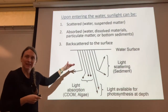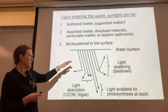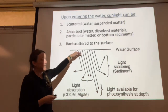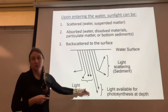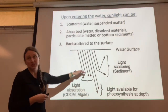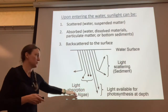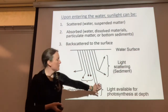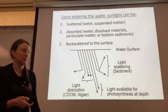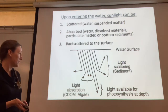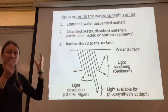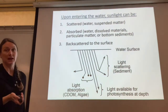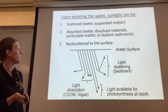Just getting light into the water is challenging enough, and then it attenuates — meaning it diminishes — as it goes down through the water. So there's not much light available for photosynthesis at depth; lots of things can happen to light before it gets down into the deep parts of the lake.